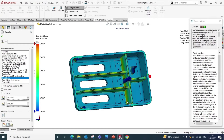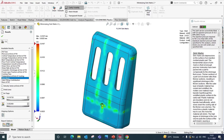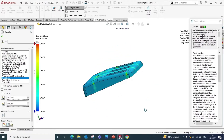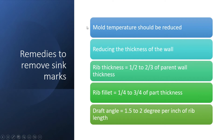Now what are the remedies you can apply to reduce sink marks? The mold temperature should reduce the thickness of the wall. If your model contains ribs, the thickness of the rib should be 1/2 to 2/3 of the parent wall thickness. If the rib contains fillets, the fillets should be 1/4 to 3/4 of the part thickness. The draft angle should also be 1.5 to 2 degrees per inch of rib length. These are some of the remedies to take care of during plastic simulation.